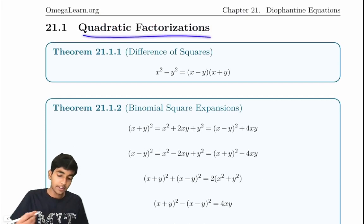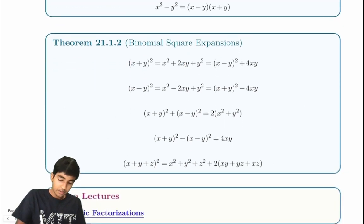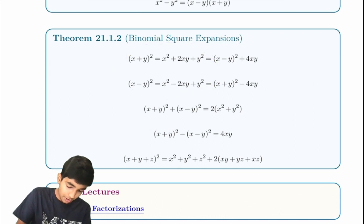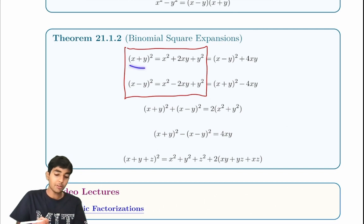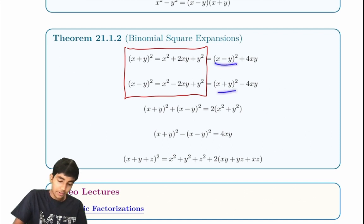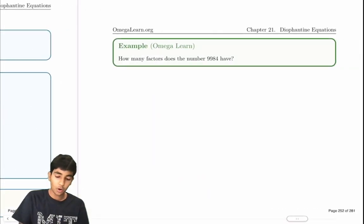Now let's move on to quadratic factorizations. Difference of squares: x squared minus y squared equals (x minus y)(x plus y). And here are some useful binomial squared expansions. The main ones to memorize are: (x + y)² = x² + 2xy + y², and (x − y)² = x² − 2xy + y². These differ by 4xy. The other factorizations are in the Mastering AMCA book, but for now we'll move on to more important concepts.